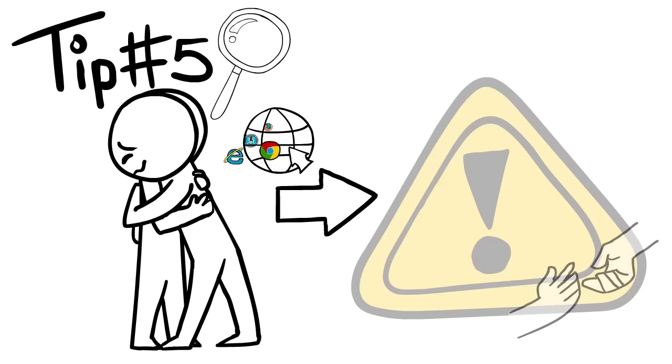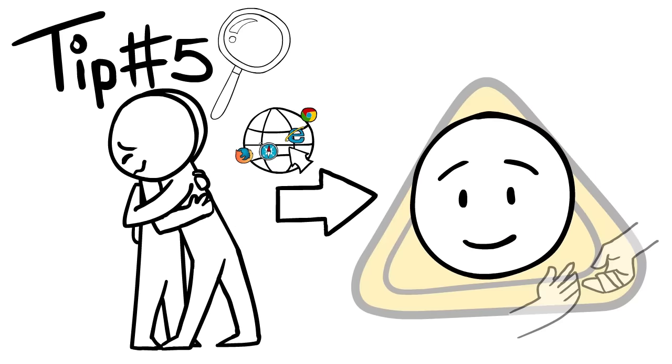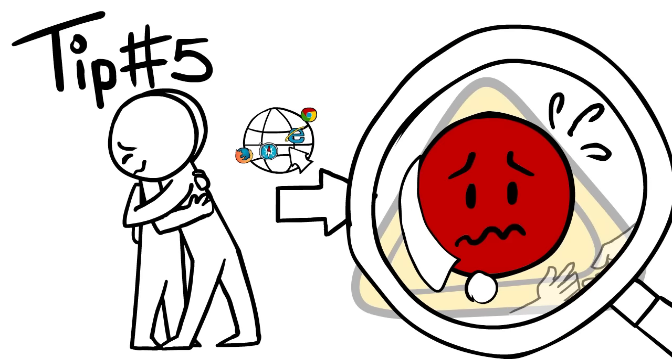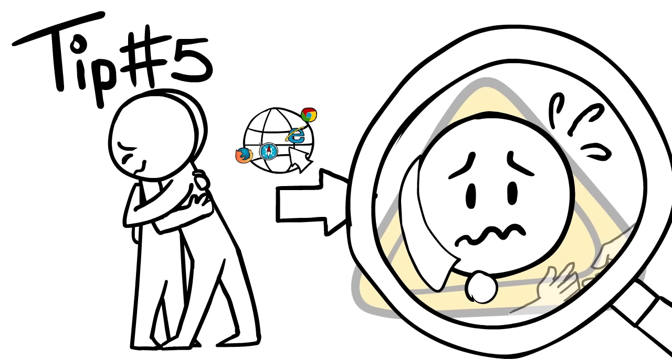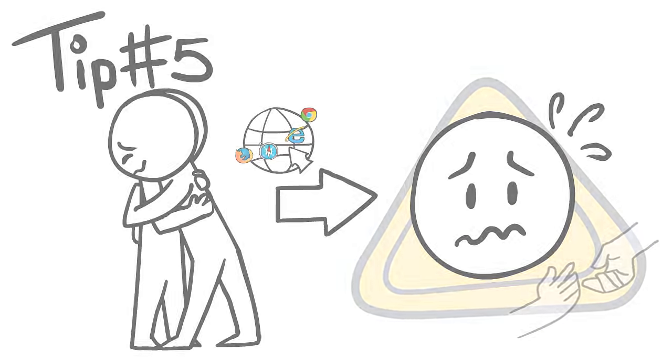Knowing, for example, that someone's first sign of anxiety can be them feeling very hot is good for spotting when a possible anxiety attack is about to rear its head.